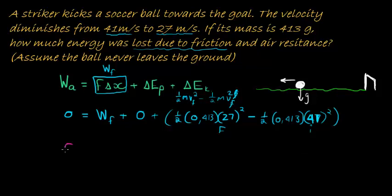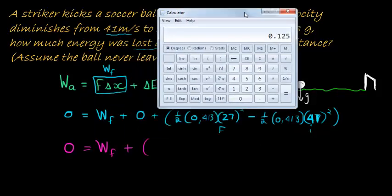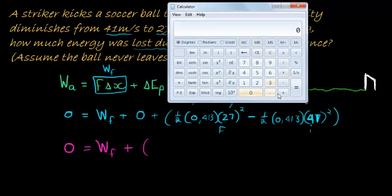And then what do we get? So just simplifying this formula a little bit, we have zero on the one side, work frictional force on this side. What do we have as a value there? Let's go and see. We have 0.5 times 0.413 times 27 squared, minus 0.5 times 0.413 times 41 squared.